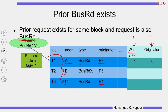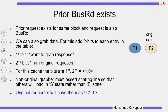We add two information bits to the request table: whether we want to grab the data, and whether we are the originator. P1 sets the grab-data bit to 1 and the originator bit to 0. With these two bits, whenever the response comes, P1 can also grab the data. For P2, both bits are 1 — it wants to grab and it is the originator. This way, when the answer comes onto the bus, P1 can also take the data.